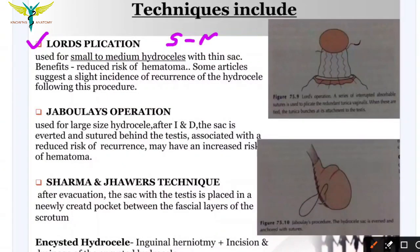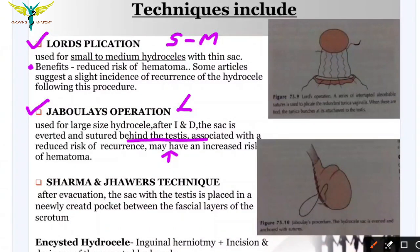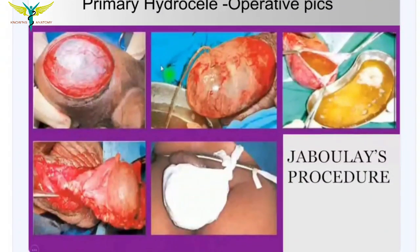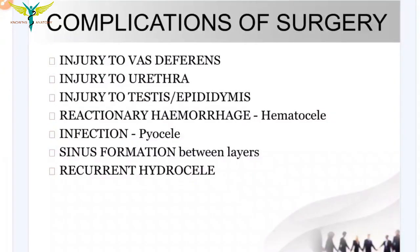Surgical techniques include: Lord's plication, used for small to medium-sized hydrocele, with the benefit of reduced risk of hematoma. The Jaboulay operation, used for large hydrocele — after incision and drainage the sac is everted and sutured behind the testis; this carries an increased risk of hematoma formation. The Sharma and Jaws technique — after evacuation of the sac the testis is placed in a newly created pocket between the fascial layers of the scrotum. For encysted hydrocele, inguinal herniotomy plus incision and drainage of the encysted hydrocele is performed.